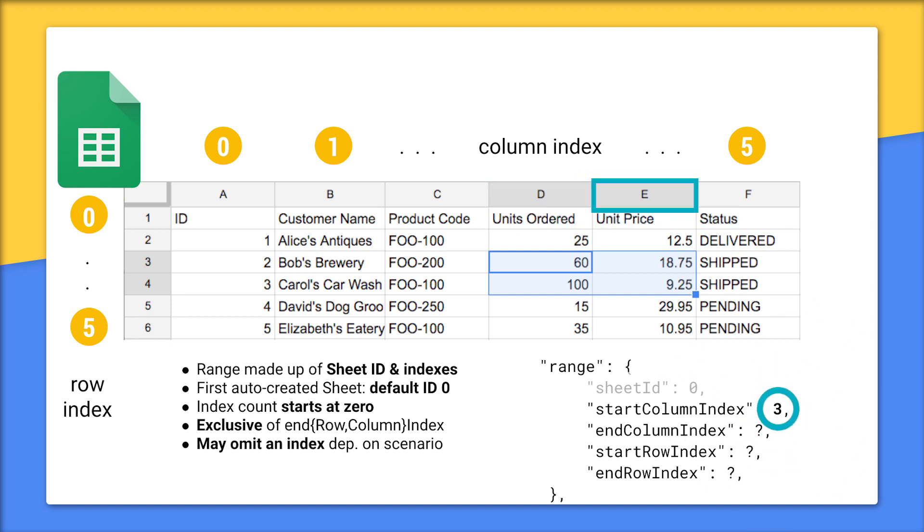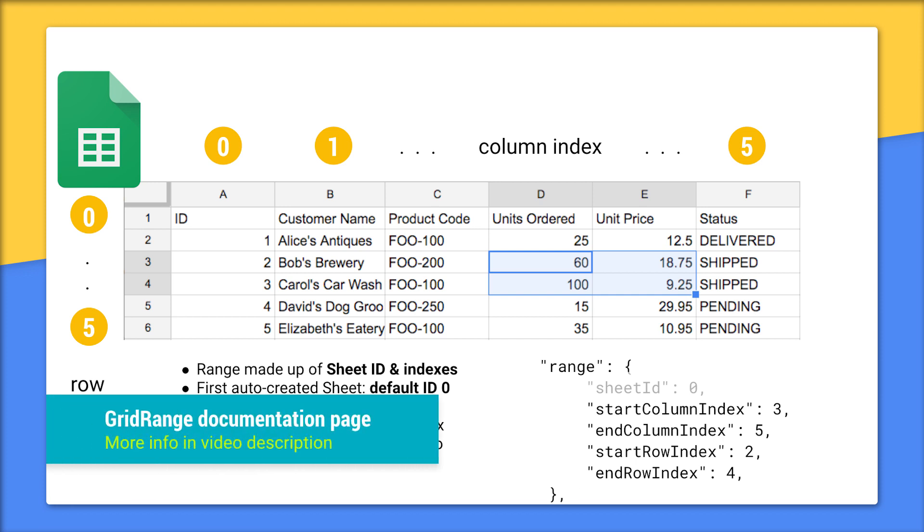It ends at column E, which is 4. But since the end index is excluded, we need to bump that up to 5. Similarly, the starting row is 3, but that's at index 2. Finally, it ends at row 4, which is at 3. But we need to bump that up to 4. Good job. Now you know how to set up ranges. To see more examples and learn more about grid ranges, see the documentation.